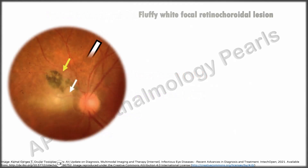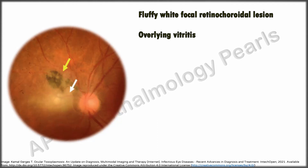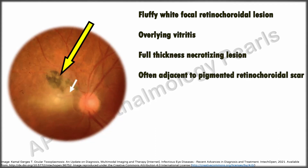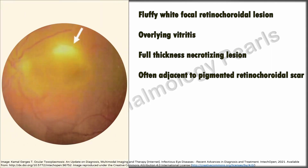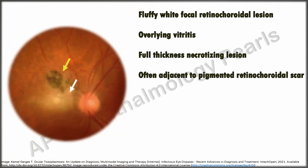A typical lesion is a fluffy white focal retinochoroidal lesion with a moderate degree of overlying vitritis, producing the classic 'headlight in the fog' appearance. The lesion is a full-thickness necrotizing lesion often situated adjacent to a pigmented retinochoroidal scar, though sometimes the lesion may occur without an adjacent scar. The scar is believed to harbor cysts that release organisms on rupture, causing adjacent retinitis.